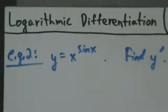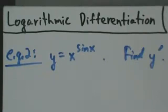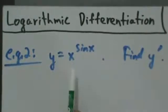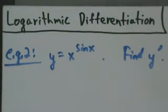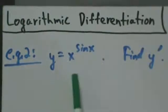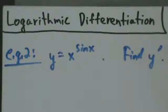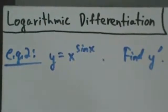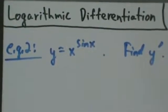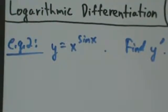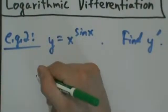Alright, here's example two with logarithmic differentiation. Example two: y equals x to the sine of x. We want to find y prime. This is a little bit like example one, where we had sine of x raised to the x, but now we have it the other way around — x to the sine of x. The functions look similar when written down, but their derivatives are going to look pretty different.